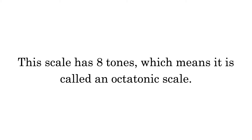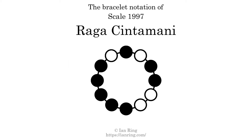This scale has 8 tones, which means it is called an octatonic scale. This is a bracelet notation diagram of scale 1997. The shaded circles represent tones that appear in the scale, and they are read clockwise, starting at the top.